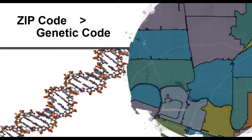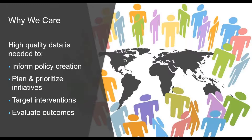We really don't want to avoid using address data completely. A person's zip code is a more important predictor of their health and longevity than their genetic code — which gives us a good reason to use zip code or other address-type data in our health work. For those trying to improve population health, the more detailed the geographic information, the better. Organizations often want to create policies, plan community health initiatives, geographically target interventions to allocate resources effectively, and evaluate outcomes. The level of geographic detail in a dataset can be considered a measure of its quality and usefulness.